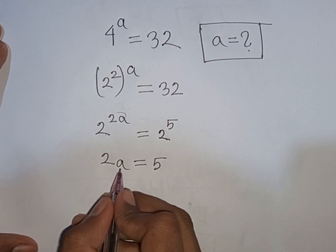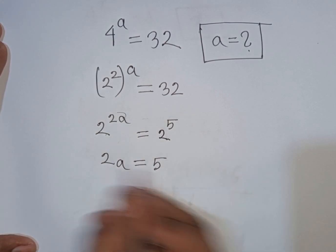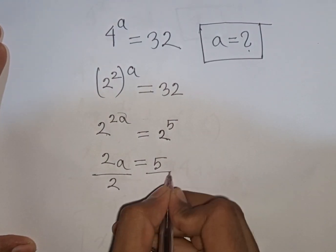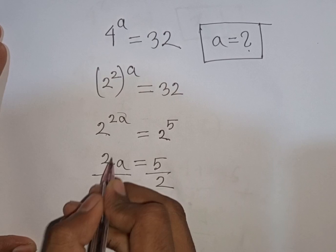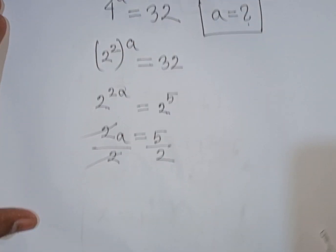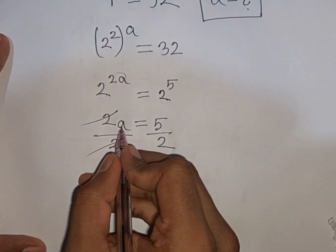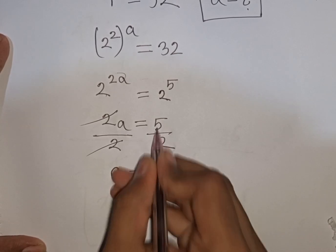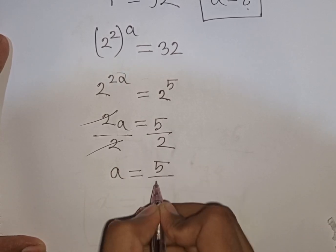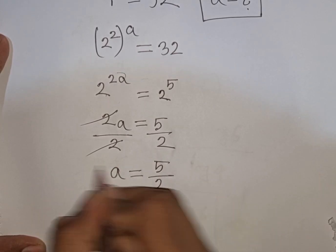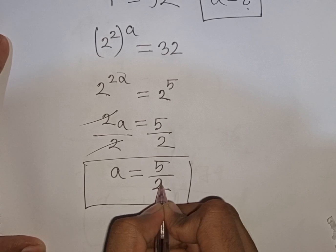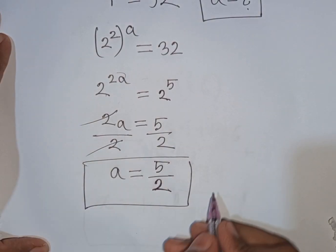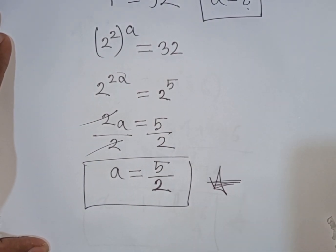Now we need the value of a, so we divide both sides by 2. This 2 will be cancelled. So a = 5/2. This is the value of a, and this is our final answer.